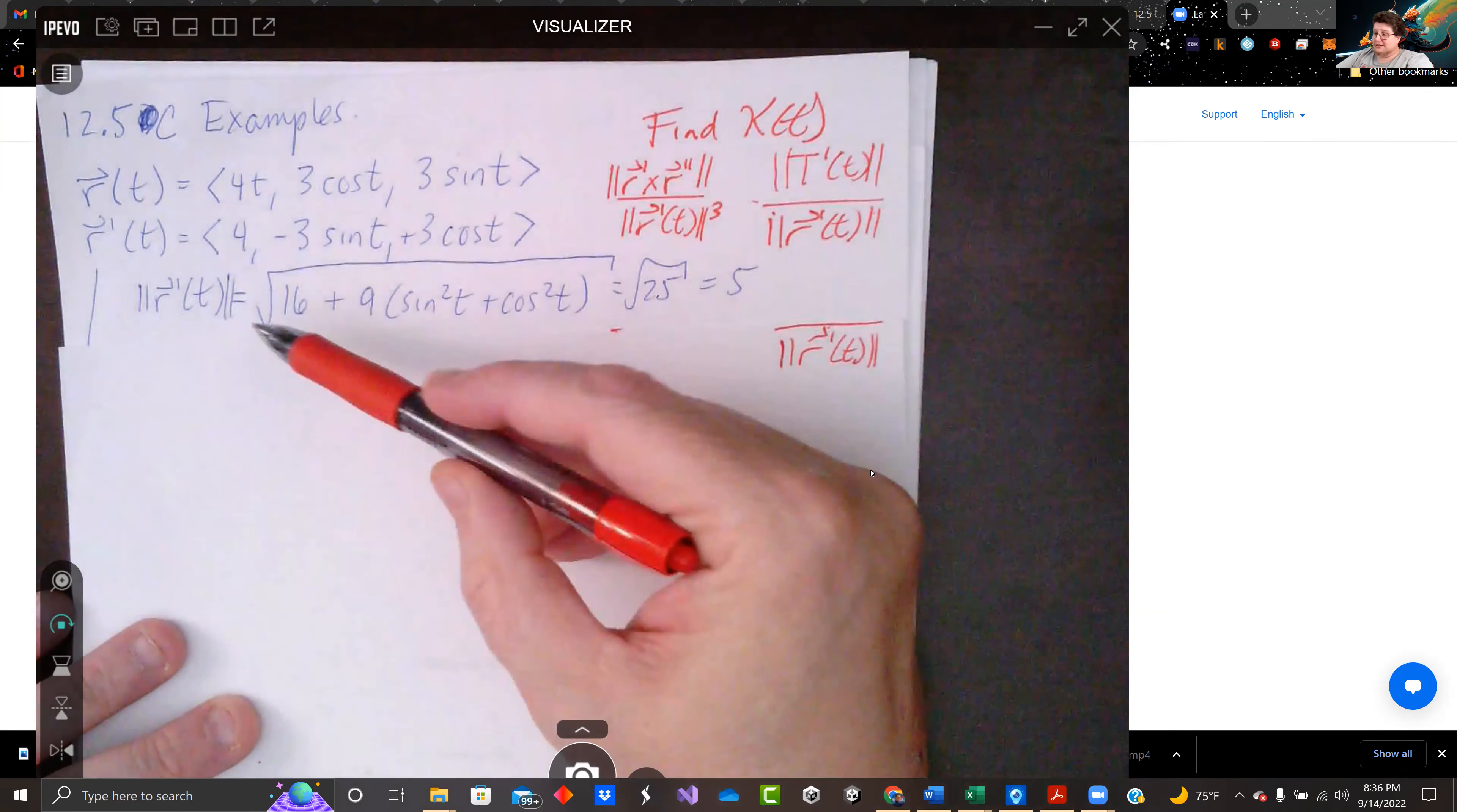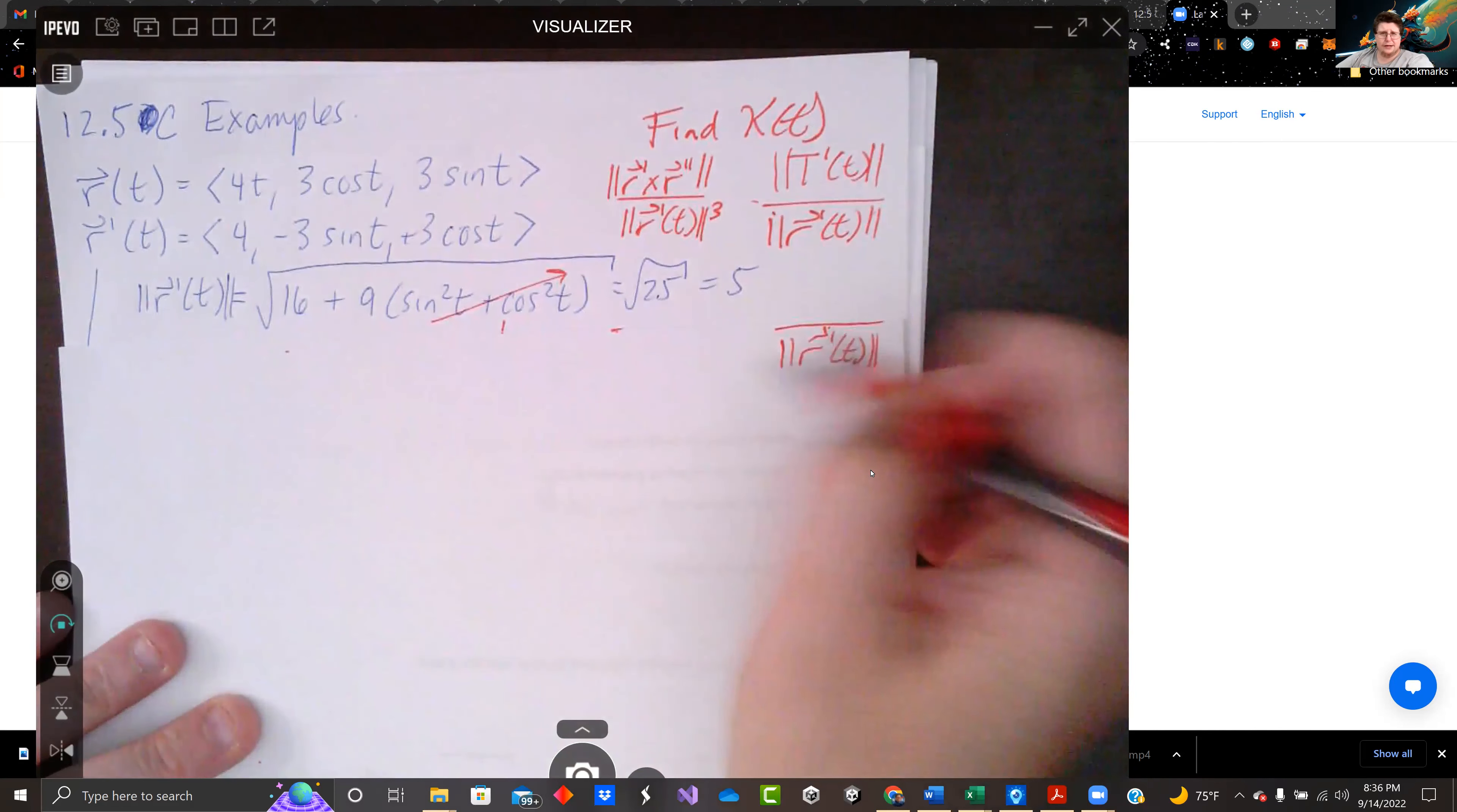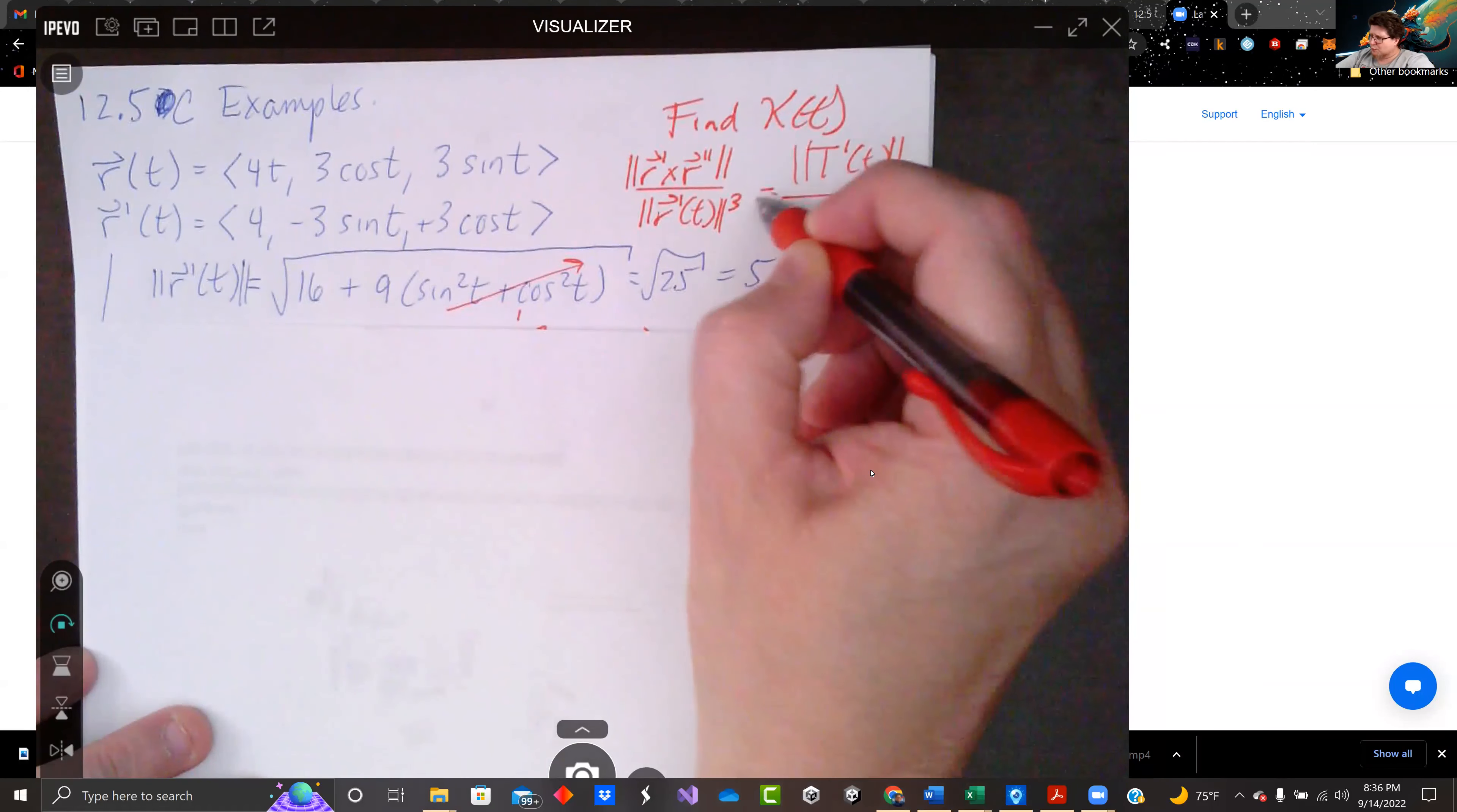So we take the magnitude of this, and 4 squared is 16, and we get our same song with sine squared and cosine squared. Again, that part equals 1. 16 plus 9 is 25. The magnitude of r prime of t is just 25, or 5. So I think it might be easy just to do the tangent vector rather than doing a cross product.